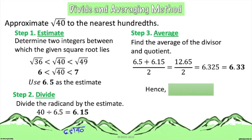From the given instruction, you have to round it off to the nearest hundredths, so the answer is 6.33. To express the final answer, it would be: the square root of 40 is approximately 6.33.